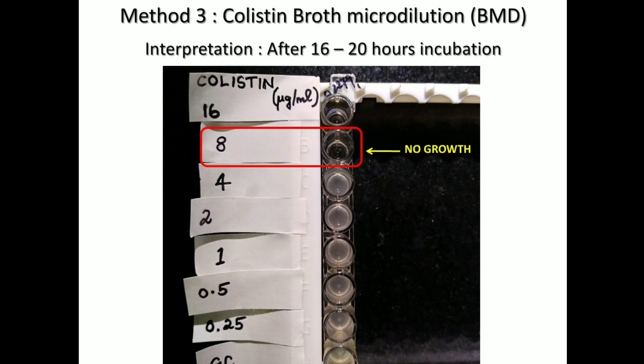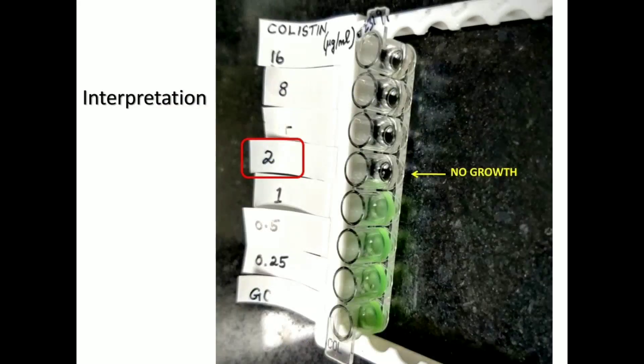The next isolate tested is a Pseudomonas aeruginosa, which makes interpretation easy based on its pigment and growth. Here you can see that the 2 microgram per ml colistin well has completely inhibited growth, giving an MIC value of 2 microgram per ml, which is intermediate.